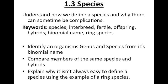Hopefully by now we can understand what the definition of a species is and why it's sometimes difficult to classify members of a species. We can identify an organism's genus and species from its binomial name, compare members of the same species and hybrids, and explain why it isn't always easy to define what a species is using the example of ring species.